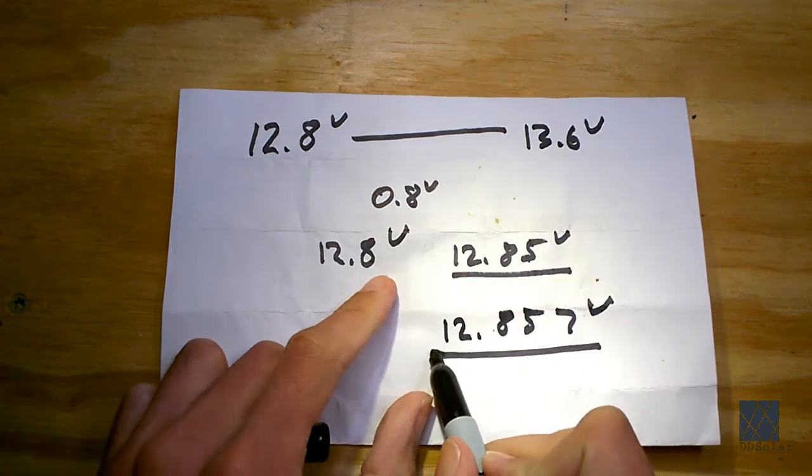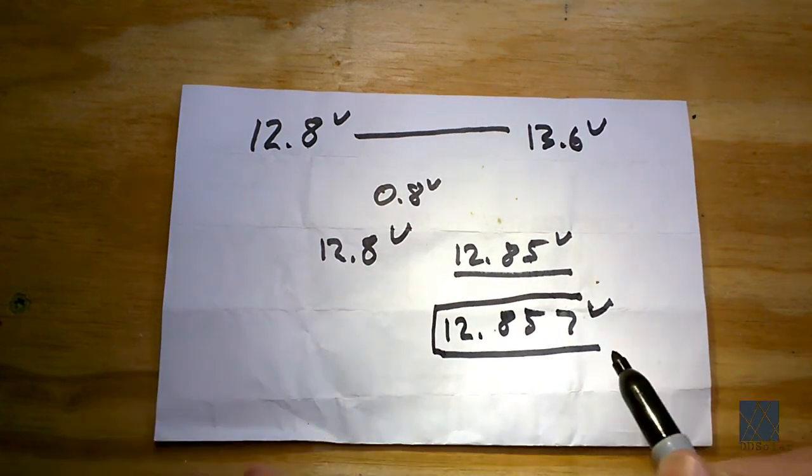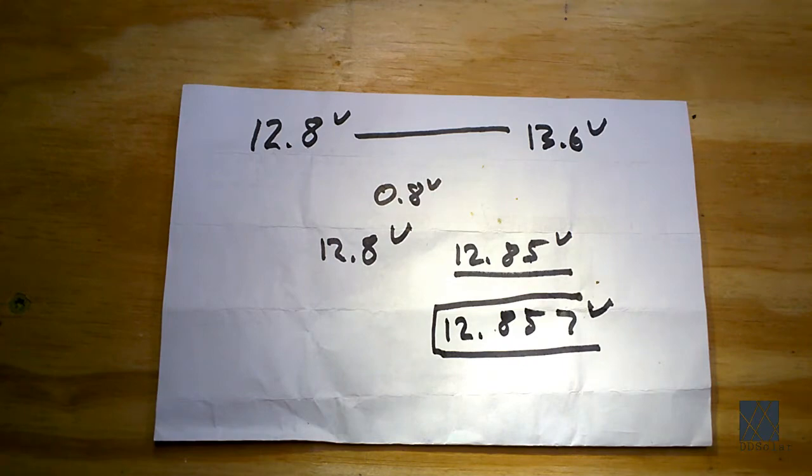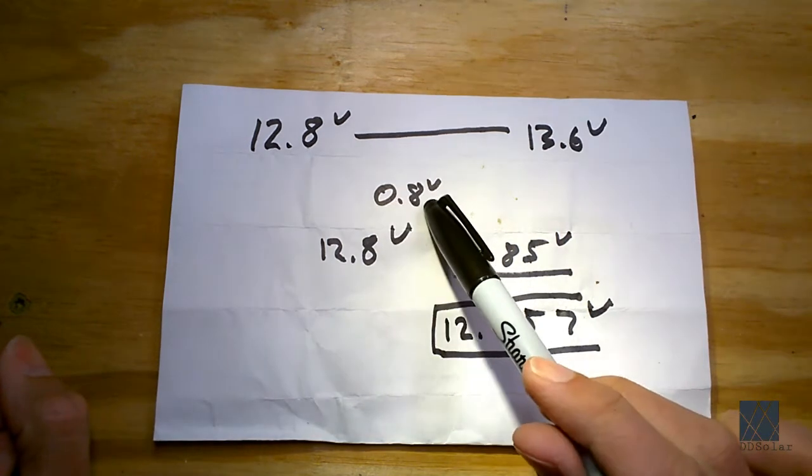So the type of voltmeter I need is this kind here that reads in three places after the decimal. So if we go up here 12.8 volts, 13.6 volts, 0.8 volts. So I only have 0.8 volts to work with.